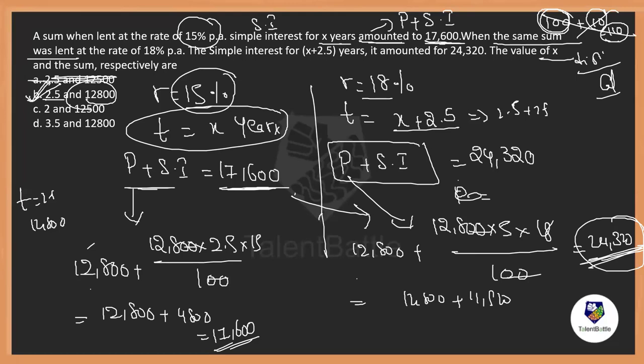So the value of X is 2.5 years and the principal is 12,800. Option B. Option verification gave us the exact answer quickly. You could also use normal algebraic procedure, but using options with the on-screen calculator is faster and more reliable in the exam.